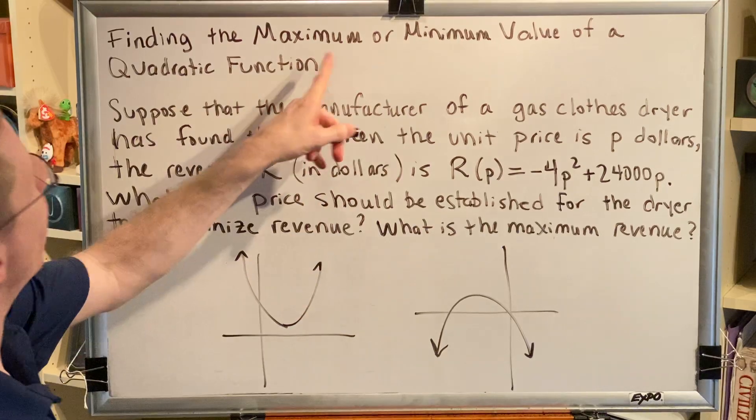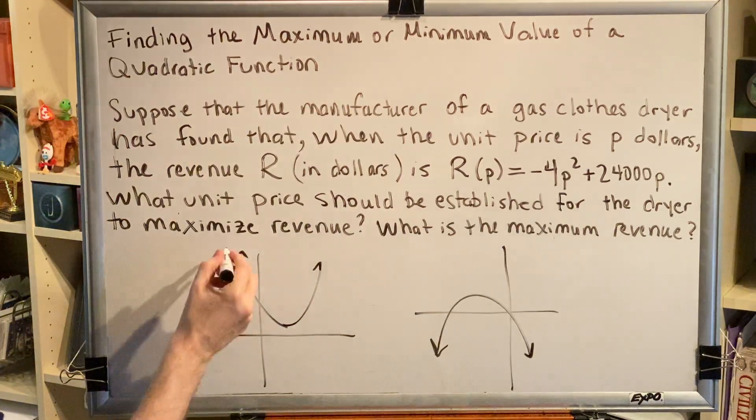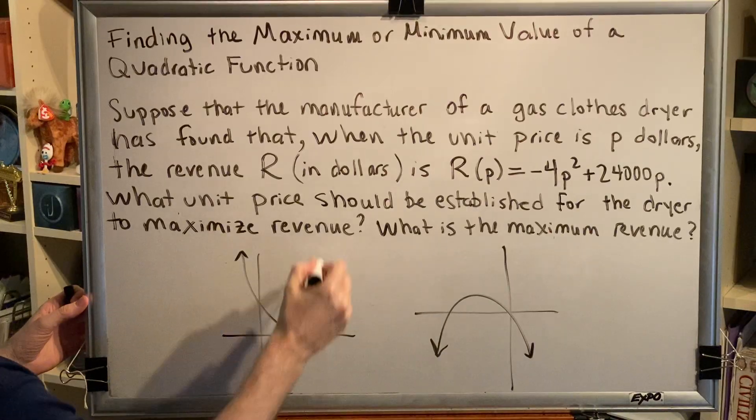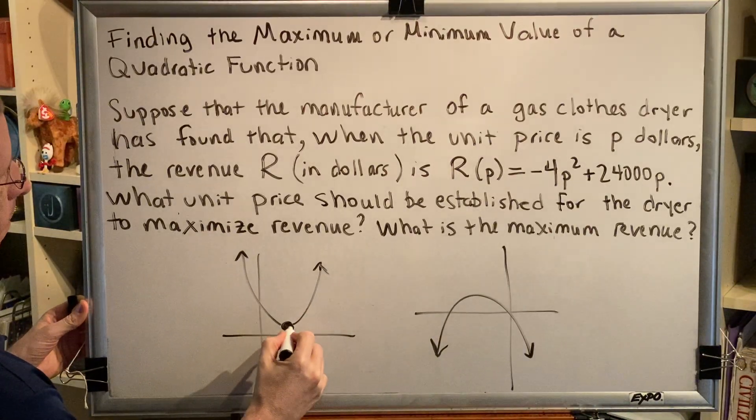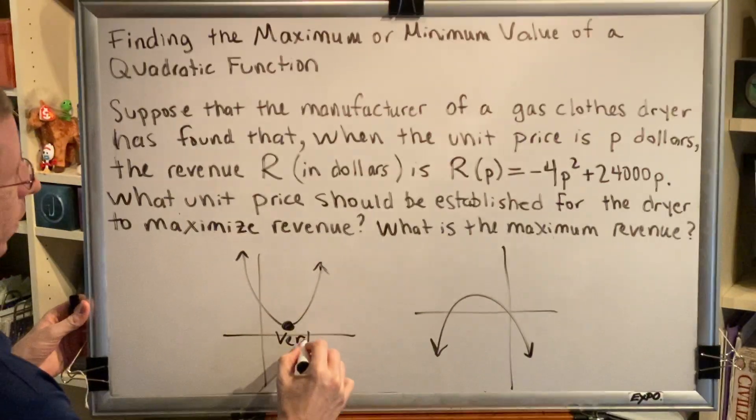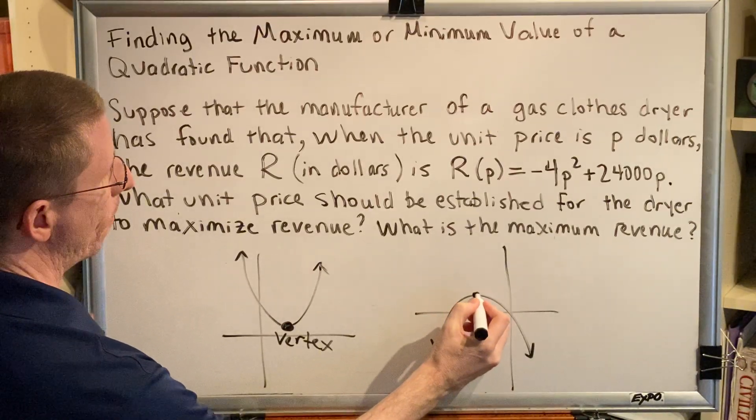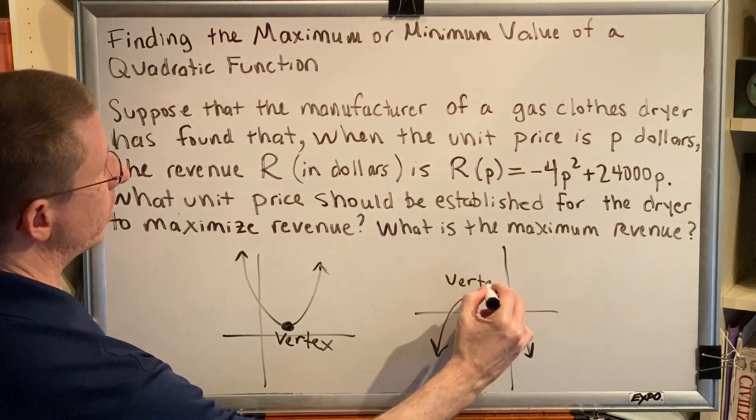Now we're talking about a maximum or a minimum value. What part of this parabola is the minimum or maximum? Well, this parabola opens up and so it has a minimum and the location is the vertex. This parabola opens down, therefore it has a maximum and the location is also at the vertex.